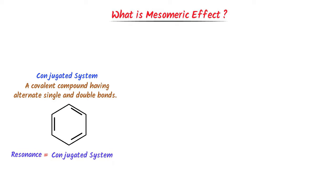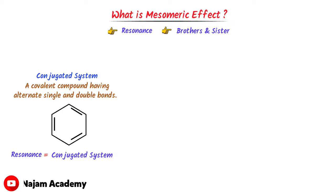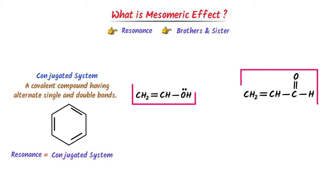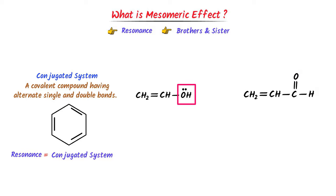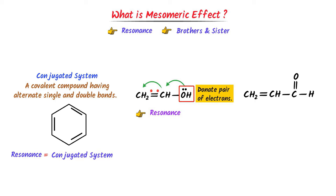We have already learned that for mesomeric effect, the first condition is resonance and the second condition is resonance having one sister — that is, a functional group. Consider these organic compounds which contain alternate single and double bonds — they are conjugated systems and resonance is possible. In the first case, the oxygen of the hydroxyl group has a lone pair of electrons, which is shifted to the adjacent carbon, and the pi electrons are shifted further. This hydroxyl group donates electrons in the conjugated system through resonance — this is positive M effect, and both resonance and mesomeric effect occur.